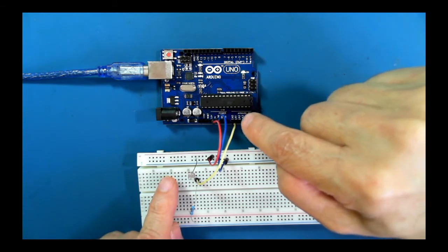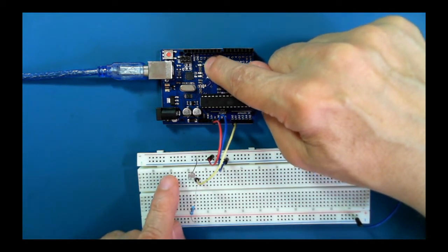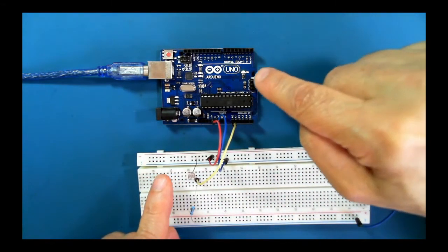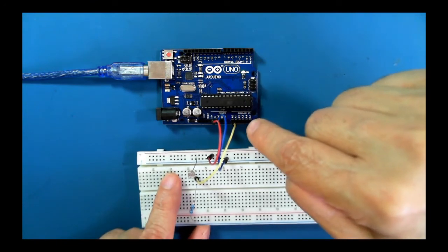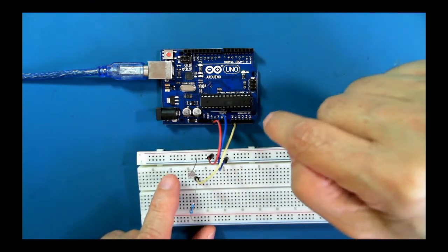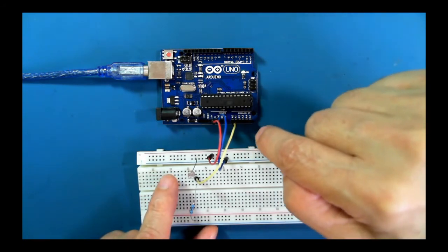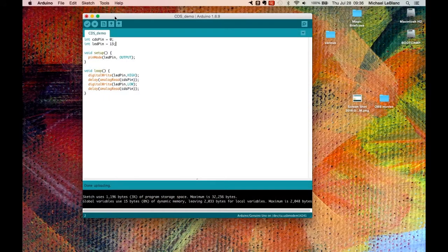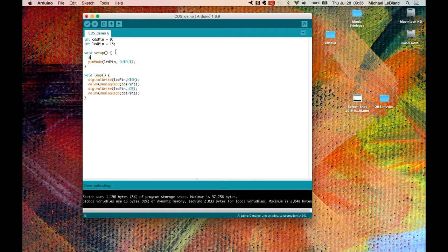Now, we can't, by just looking at the light, determine what that number is, but we can go back into the sketch and change the sketch so that we can look at that number through the serial output. So to do that, in our setup, we do serial.begin, and we'll do the 9600 baud.